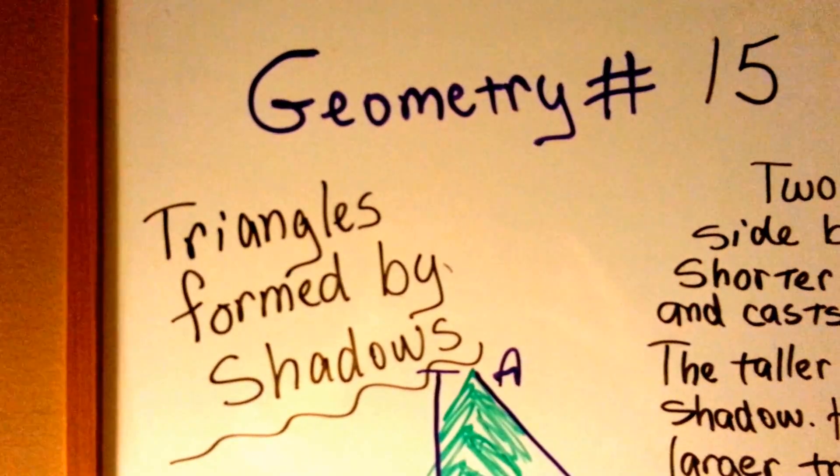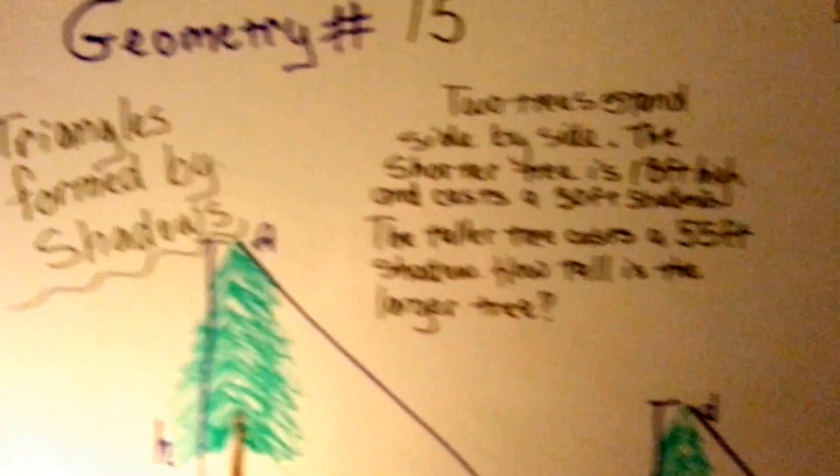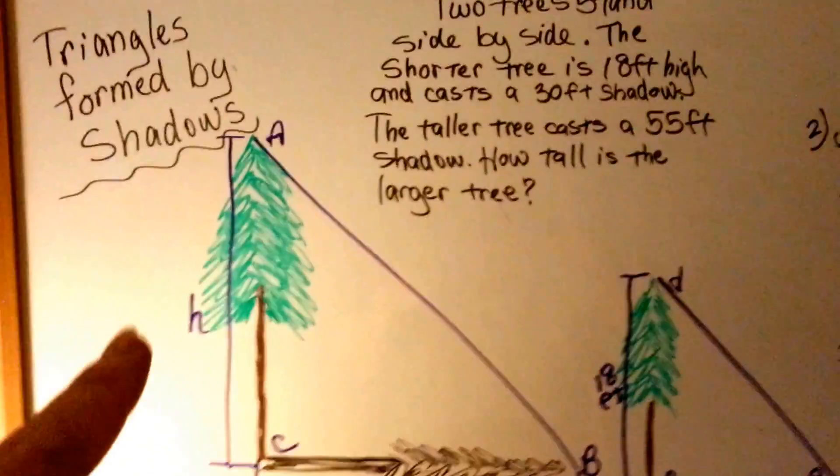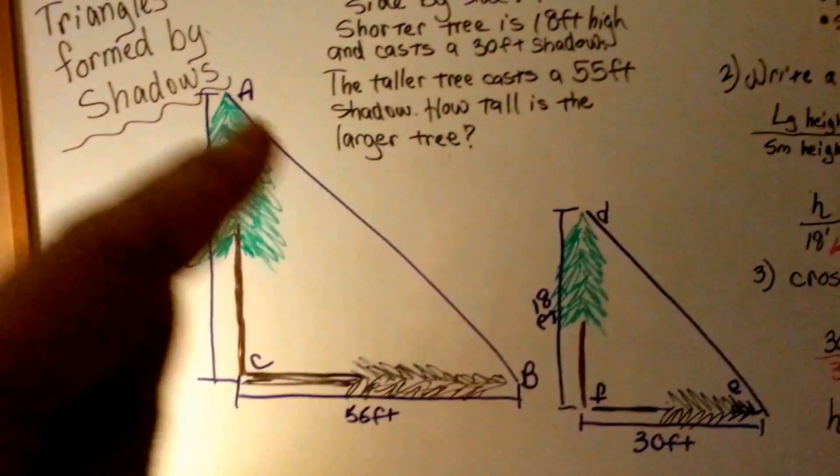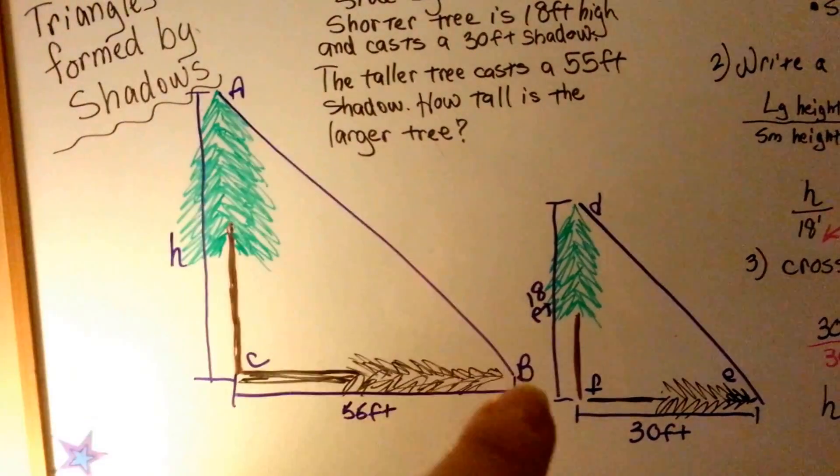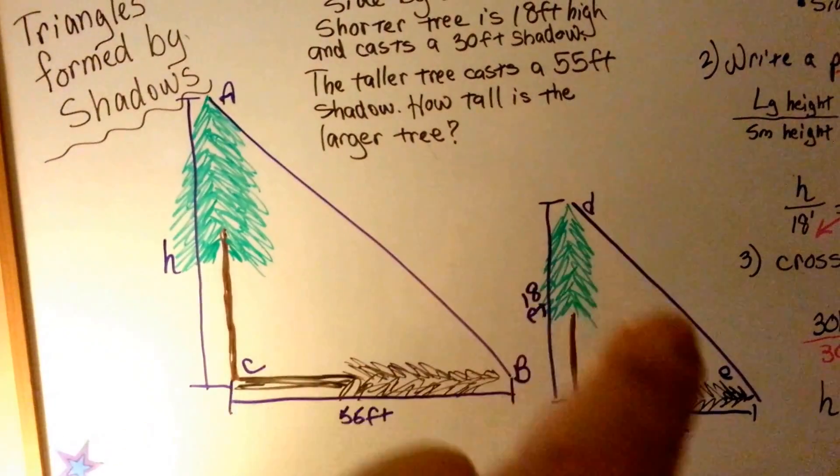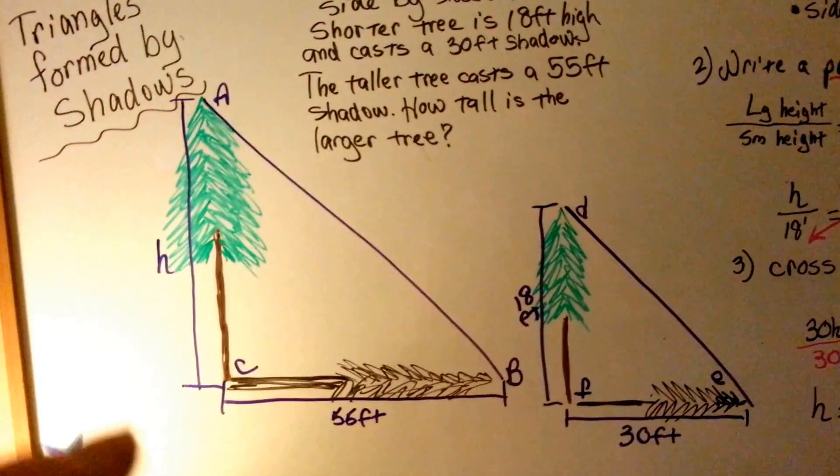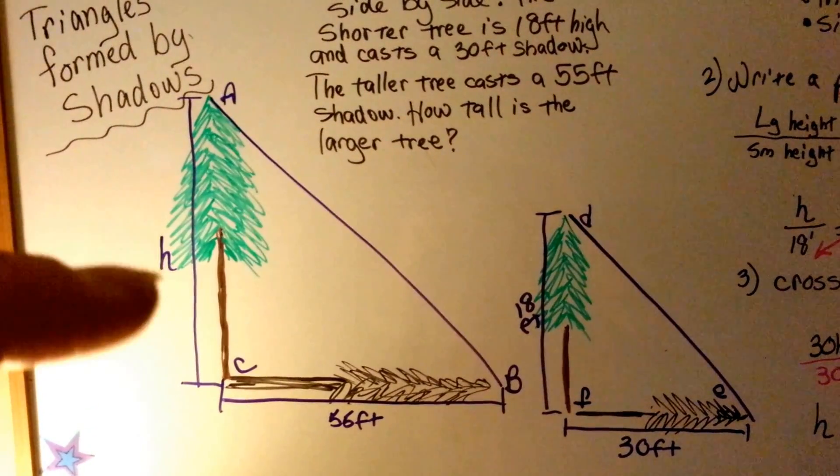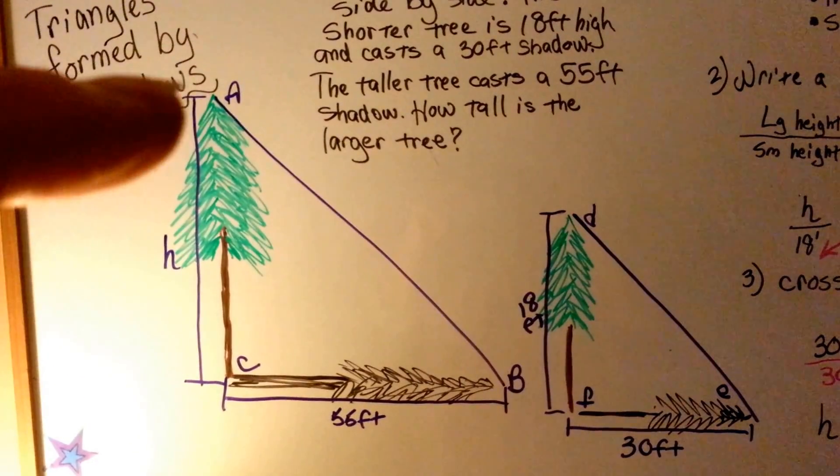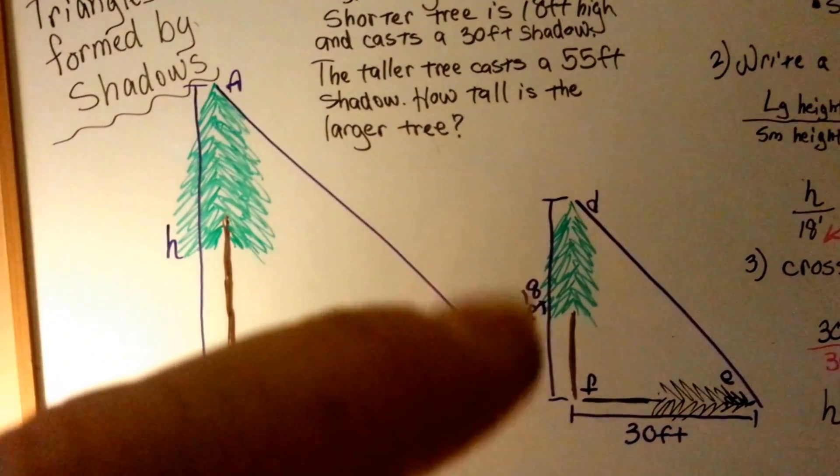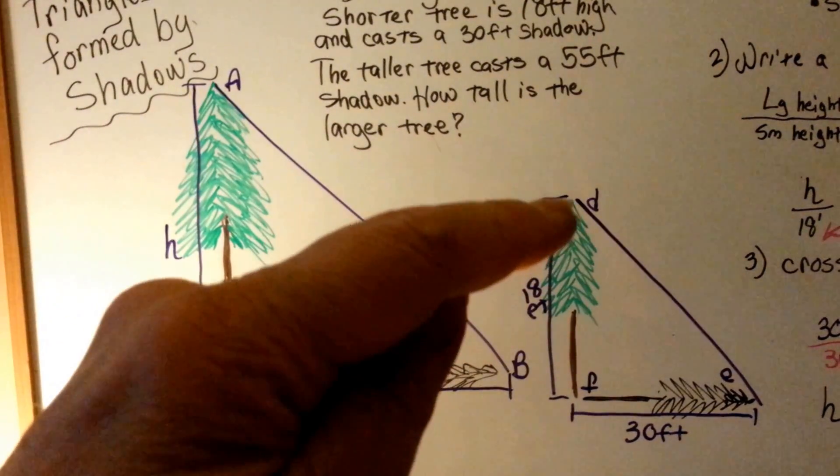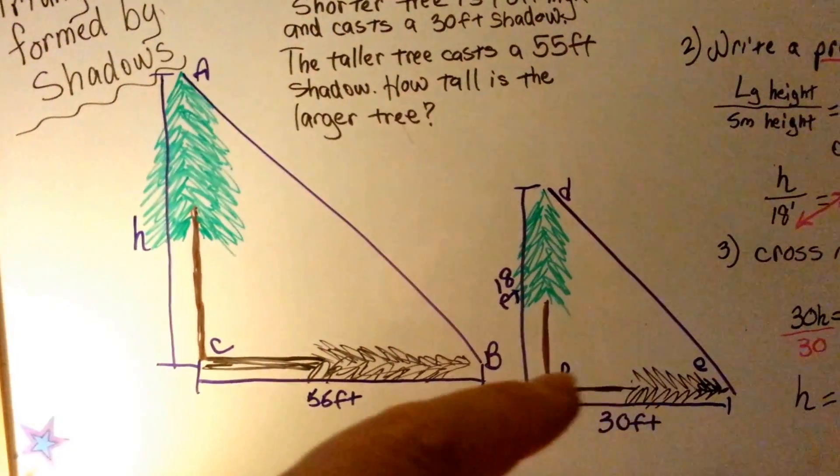Triangles formed by shadows. Okay, we've got two trees here. This is the hypotenuse AB, and this is the hypotenuse DE for this one. So, the height of this tree is unknown, so we've got an H, and this is ABC. This is 18 feet tall, and this is angle DEF.